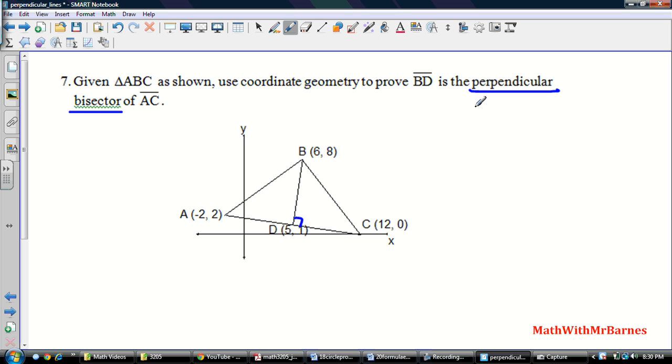Perpendicular means that there's a 90-degree angle, so let's draw a 90-degree angle there. Bisector means that it divides AC into two equal parts, so this guy and this guy would have to be equal. In order to prove that, we need to first prove that BD has a negative reciprocal slope to AC. We also need to prove that AD is the same distance as DC. Let's start with the slopes. First, let's find the slope of BD.